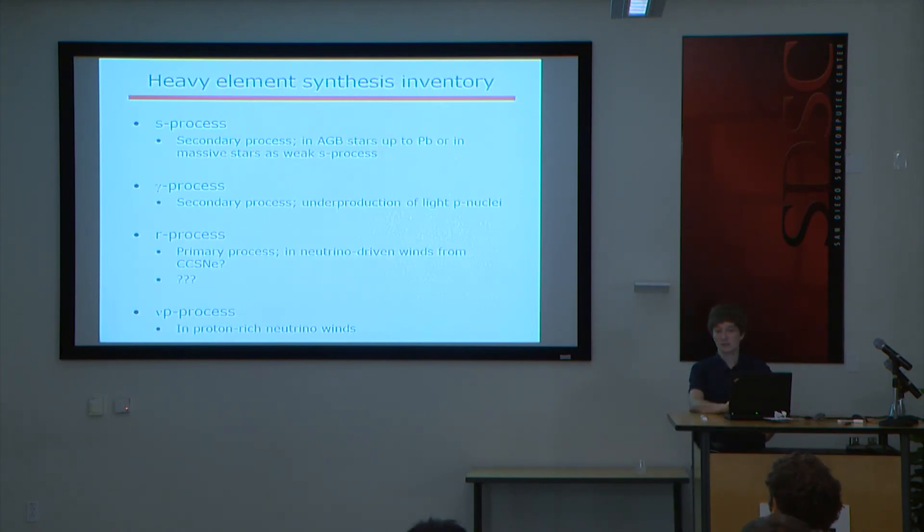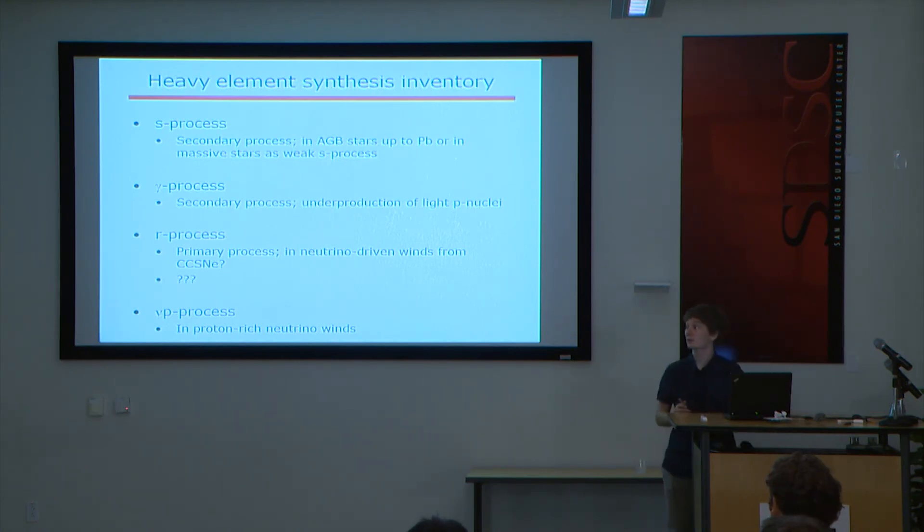In summary: the S process goes all the way to lead but is a secondary process; the gamma process makes heavy P nuclei but underproduces light P nuclei; the R process is primary but neutrino-driven winds don't quite produce the required conditions; and the neutrino-P process in proton-rich neutrino-driven winds is a candidate for the LEP process, helping address shortfalls of both the gamma process and the R process.